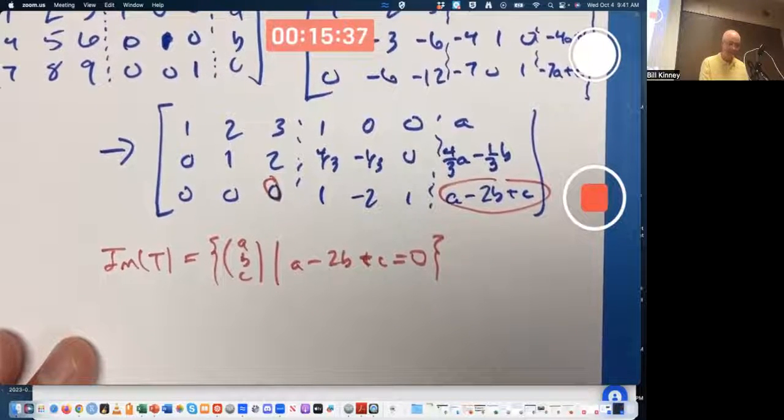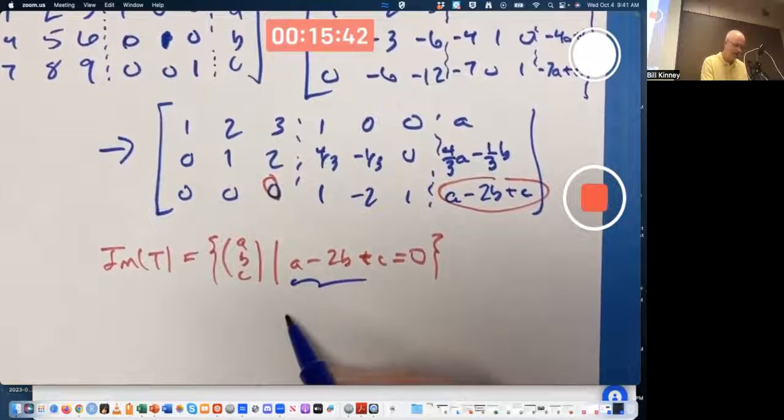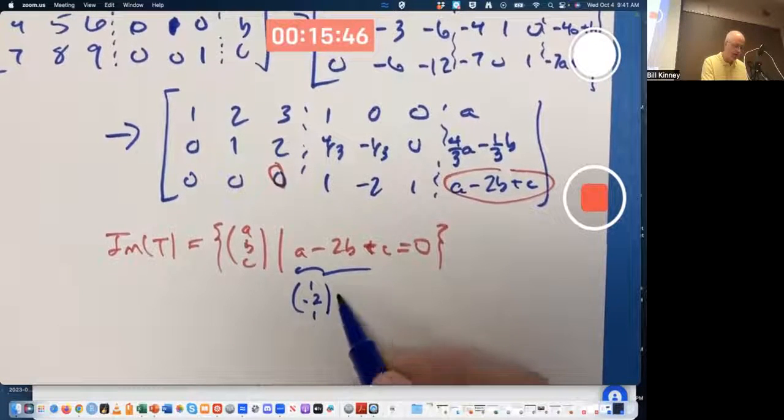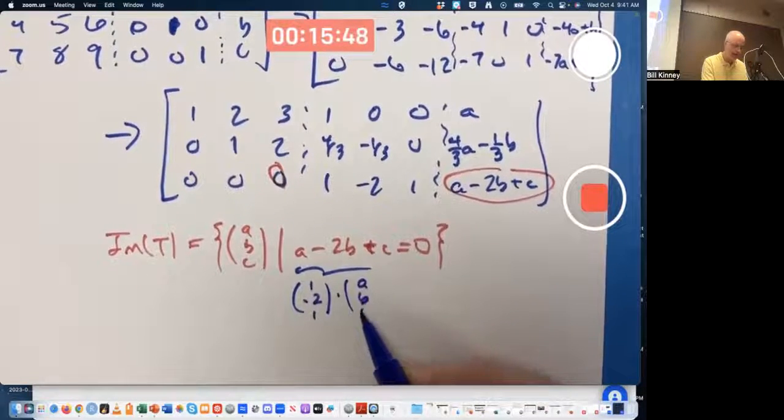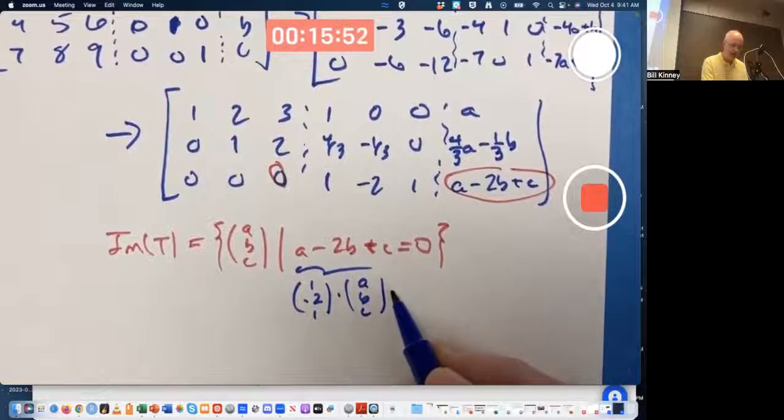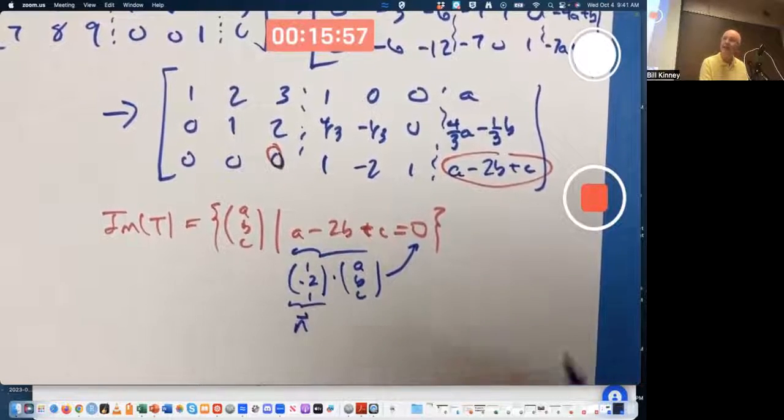If this is non-zero, then you've got an inconsistent equation. Zero equals something non-zero. So really, the image of the corresponding linear transformation is defined to be, if I think of this as a vector A, B, C, the set of all vectors A, B, C, satisfying the condition that A minus two B plus C is zero. This is equivalent to the dot product of the vector one, negative two, one, with the vector A, B, C equaling zero.